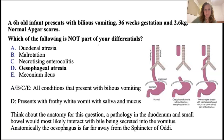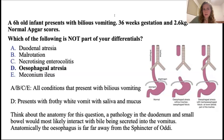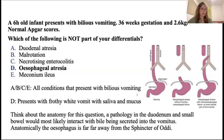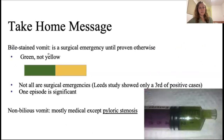In a question about a six-hour-old infant presenting with bilious vomiting at 36 weeks gestation and 2.6 kilograms with a normal APGAR score, the key is bilious vomiting. Bilious vomiting indicates pathology starting at the duodenum. The oesophagus is above that level, so oesophageal atresia would produce non-bilious vomiting - frothy white vomit with saliva and mucus. Bile-stained vomiting usually requires surgical input, whereas non-bilious vomit is more medical, except for pyloric stenosis.